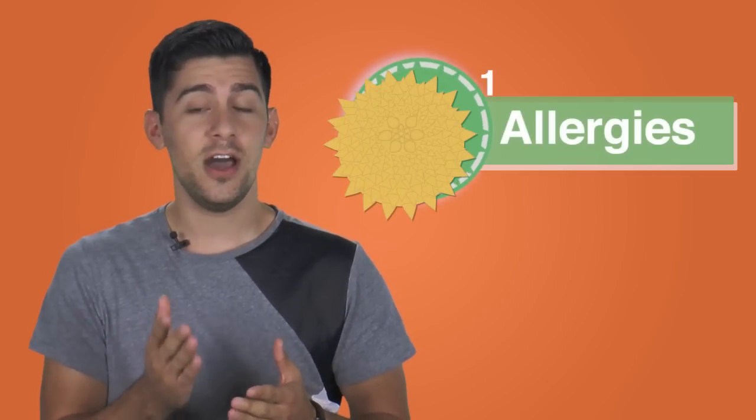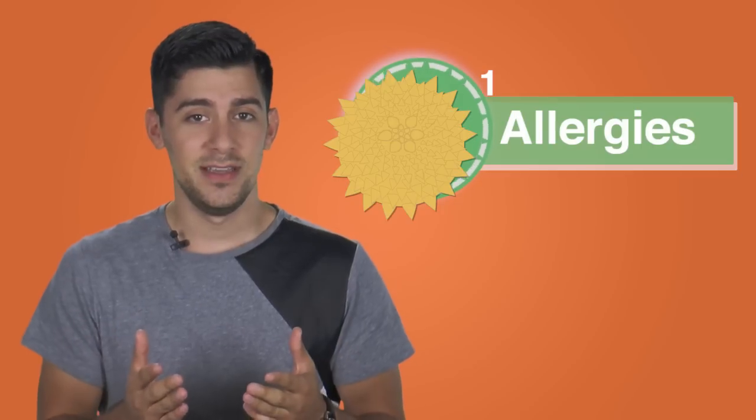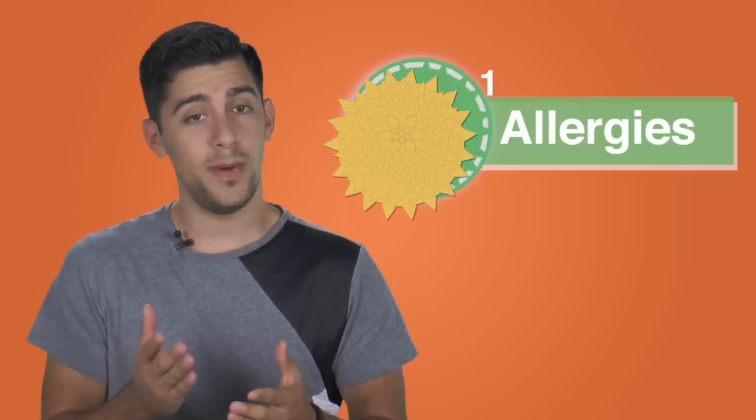1. Allergies. The role of a healthy immune system is to fend off potentially harmful foreign invaders like bacteria and viruses. Unfortunately, an overactive immune system may target less harmful substances like pet dander or pollen, leading to an immune response known as an allergic reaction.